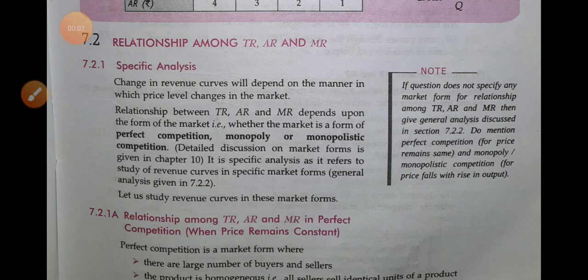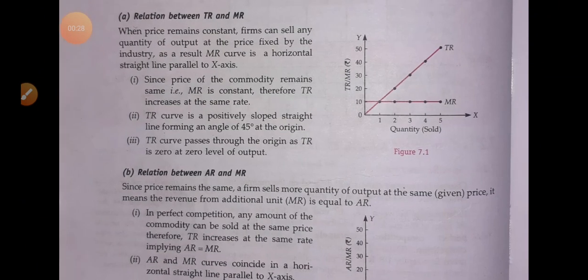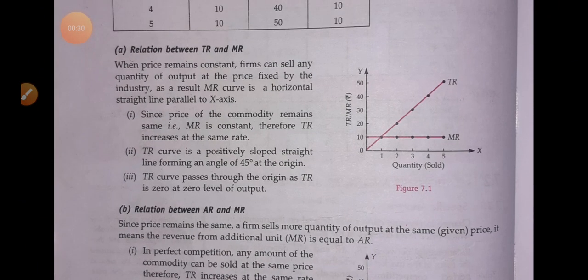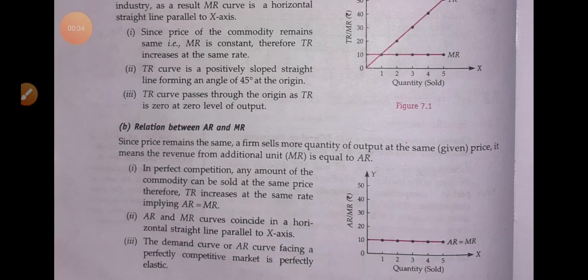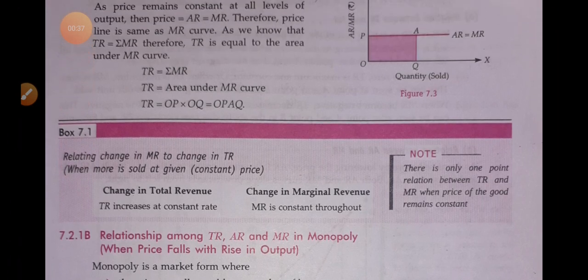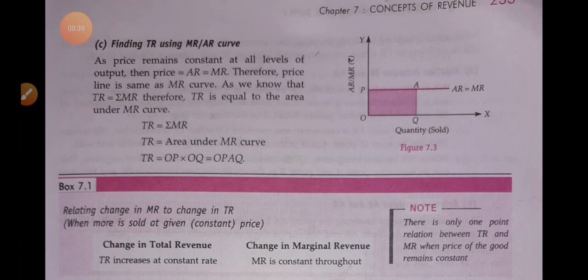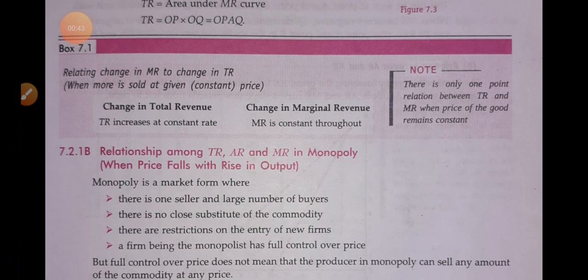Good morning students. In the last class we completed the relationship among TR (total revenue), AR (average revenue), and MR (marginal revenue) in perfect competition, where the price or AR is equal to each other and they are all constant. We studied the relation between TR and MR, between AR and MR, and finding TR by using the MR and AR curve.